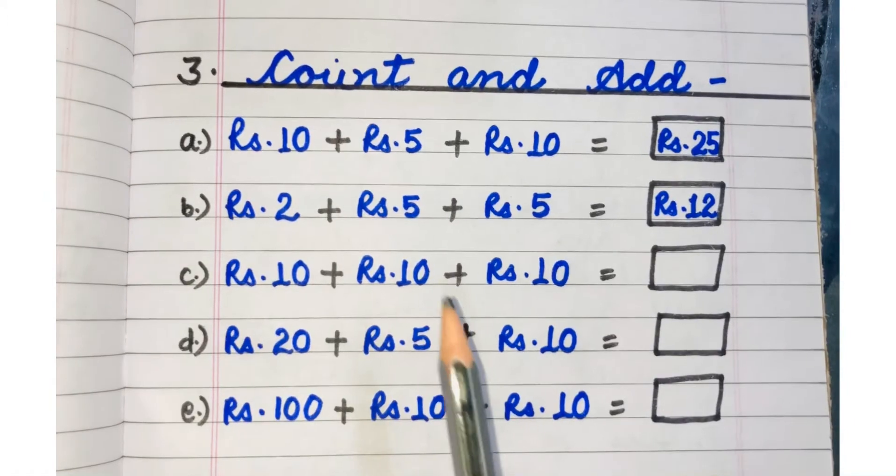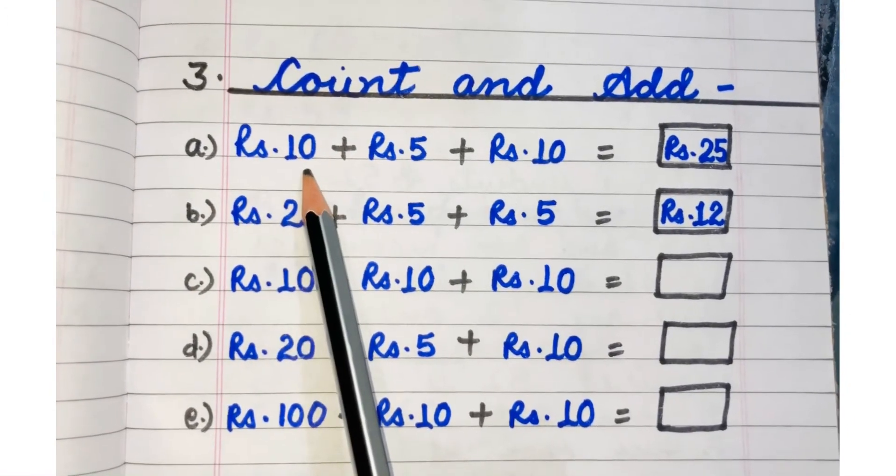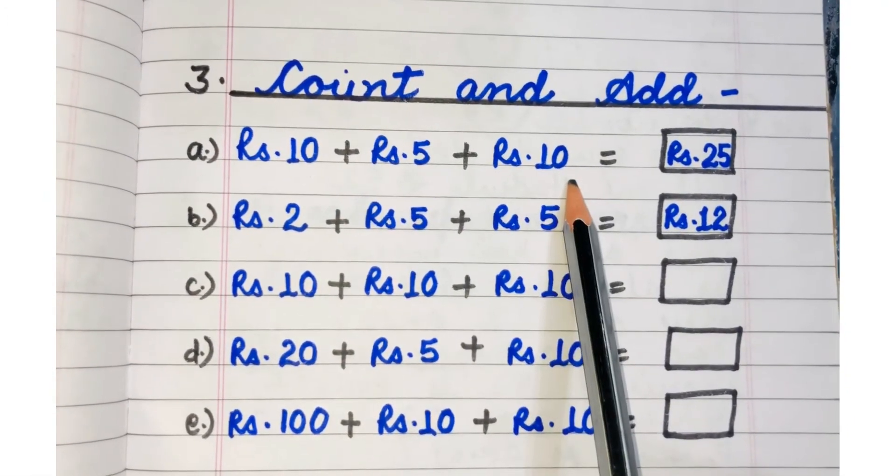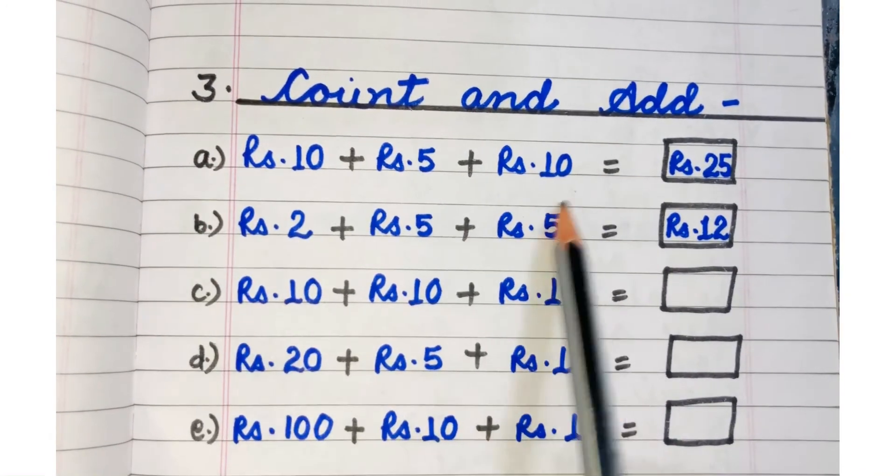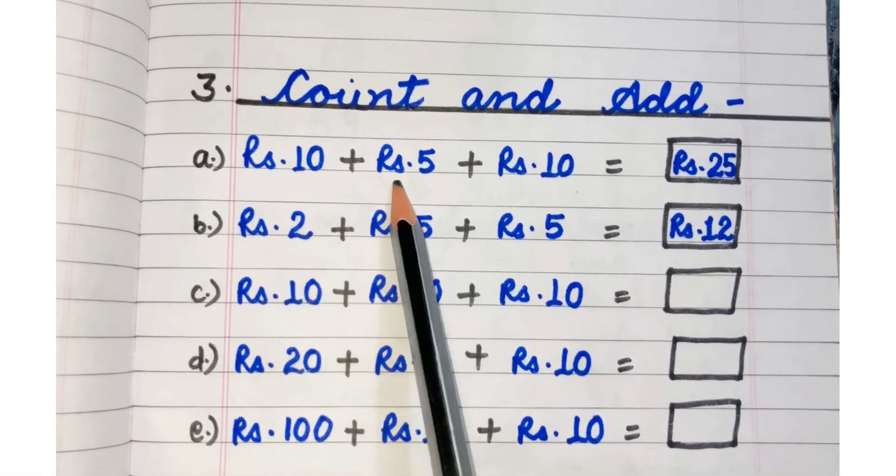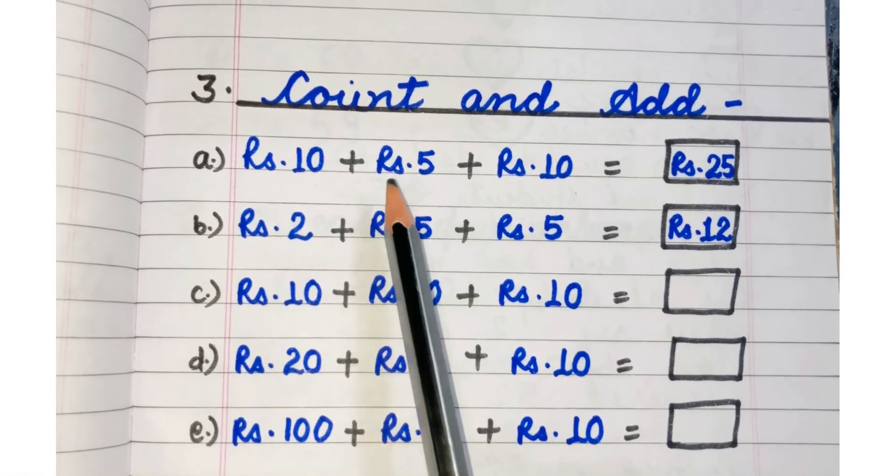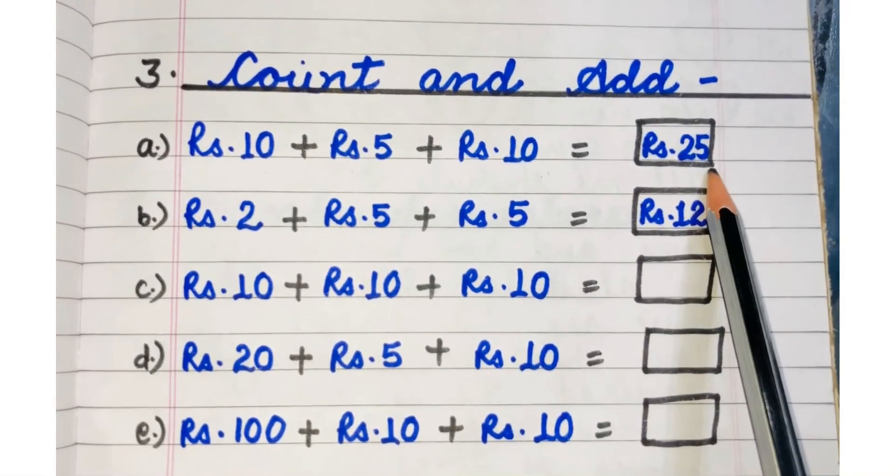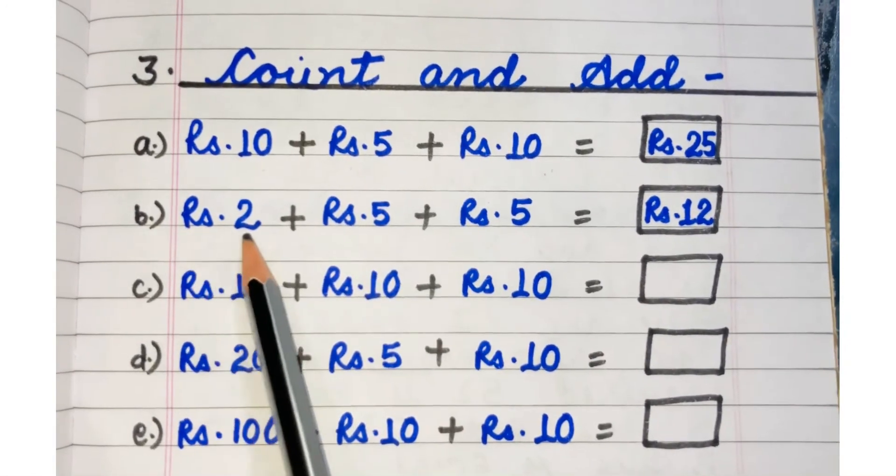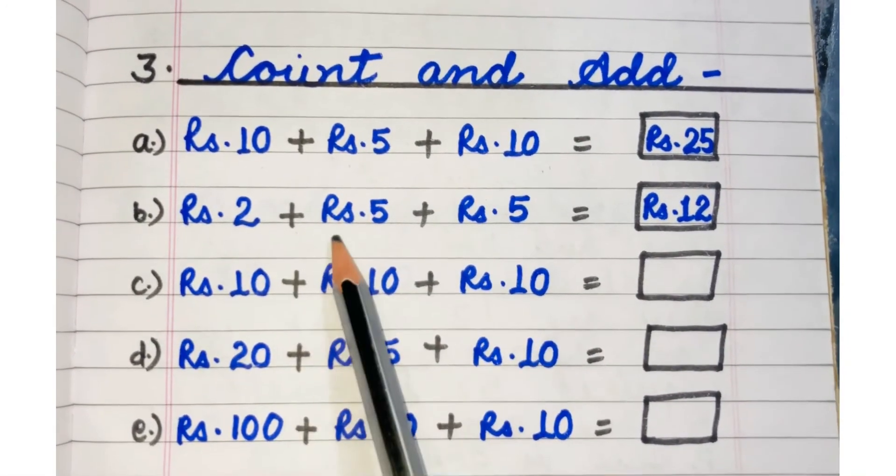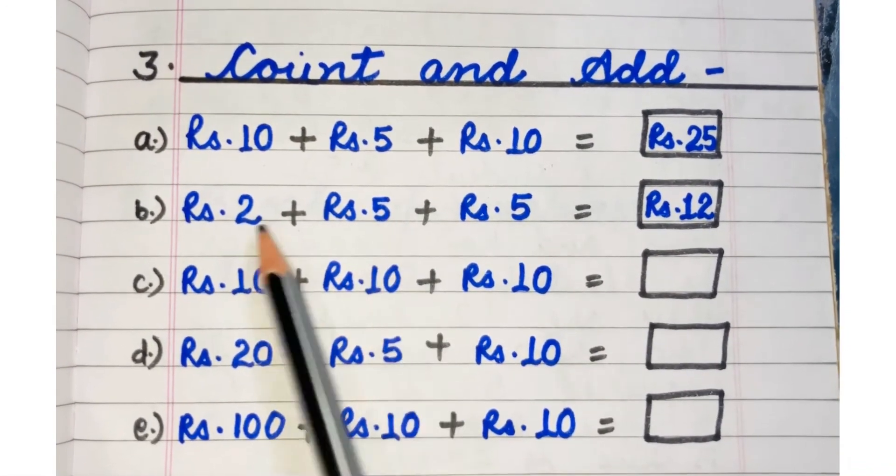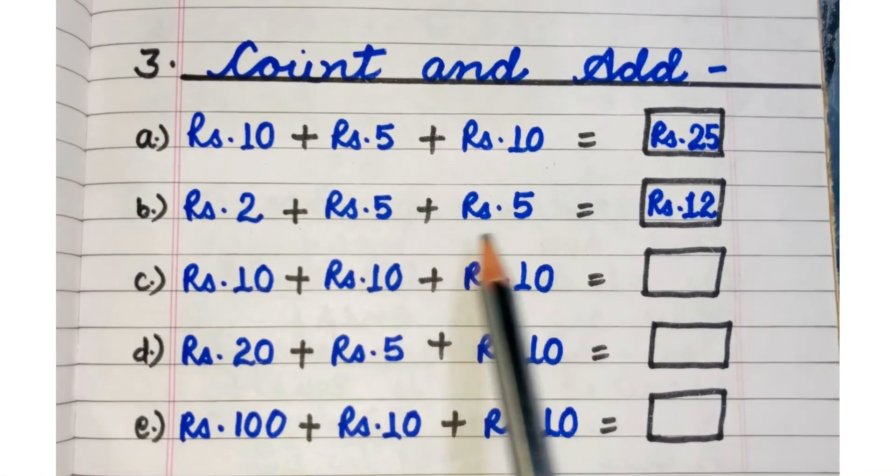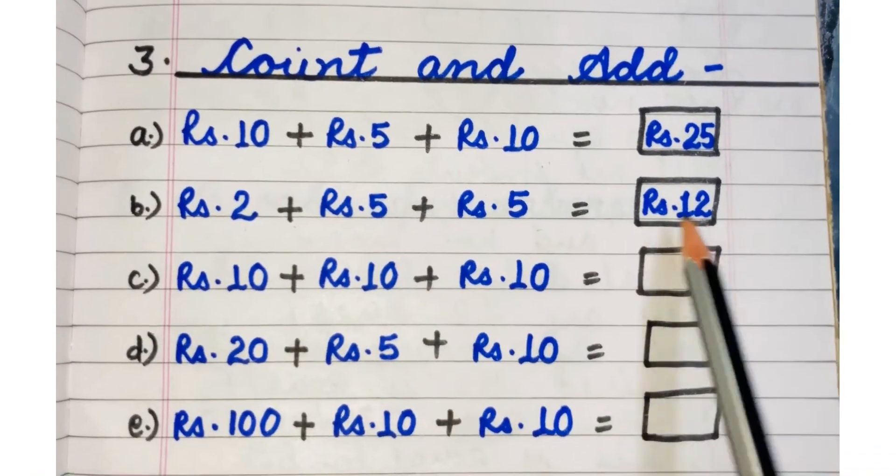Third exercise and last is count and add. Here we simply have numbers and we have to add them. Rupees 10 plus Rupees 5 plus Rupees 10. Let's add Rupees 10 and 5. Rupees 10 and 5 will be 15. 15 plus 10 is 25. Next, 2 plus 5 is 7. 7 plus 5 is 12. Rupees 12.